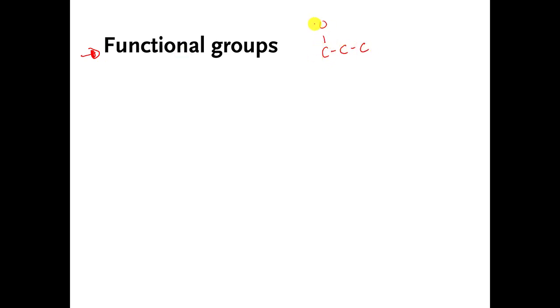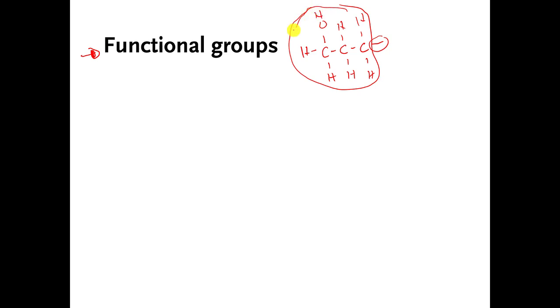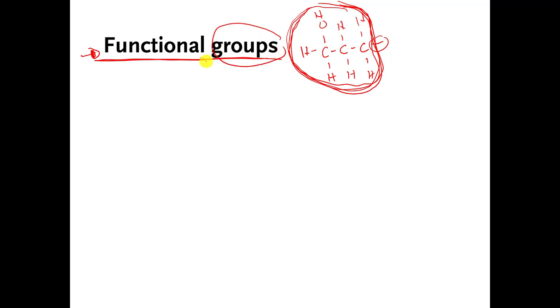If you put that particular pattern of atoms — let's say maybe three carbons, an oxygen, and a hydrogen — and you use that last bond to stick this pattern onto some other molecule, it gives that molecule a certain feature or behavior. It doesn't matter what other molecule you stick it onto; as long as you stick this specific pattern onto any molecule, it gives any of those molecules a specific feature.